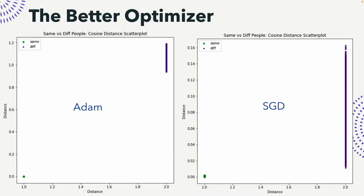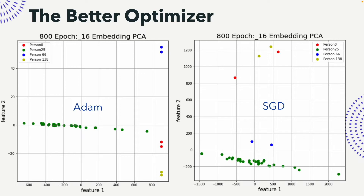Next, comparing optimizers: we tried Adam and SGD. SGD gives lesser cosine distances but the spread is quite large compared to Adam. Adam provides a much higher margin between same-people and different-people embeddings, so Adam is the better optimizer.